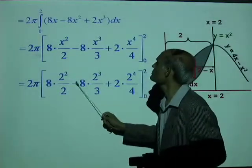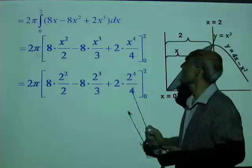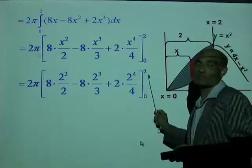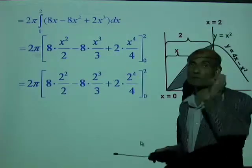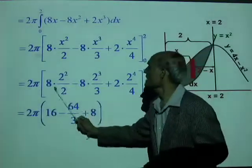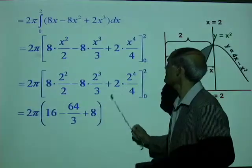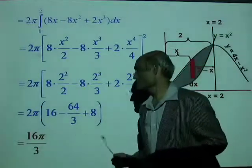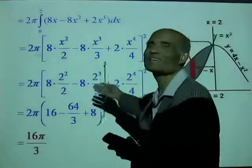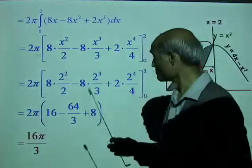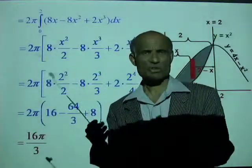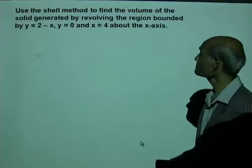Substituting x = 2: 4(4) − 8(8)/3 + 16/2 = 16 − 64/3 + 8 = 24 − 64/3. Simplifying: (72 − 64)/3 = 8/3. Multiplied by 2π gives 16π/3. These are beautiful ways of using calculus to obtain volumes of revolution.